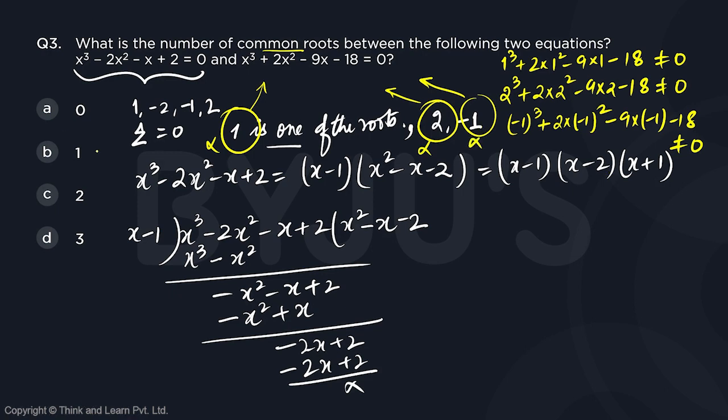So number of common roots will be 0 common roots between the two cubic equations. So the answer is going to be option A.